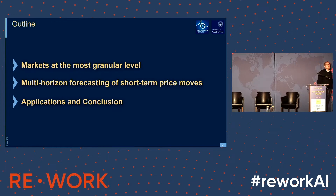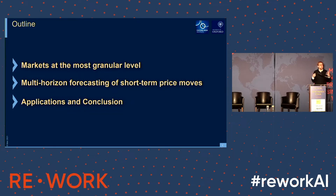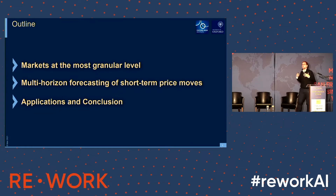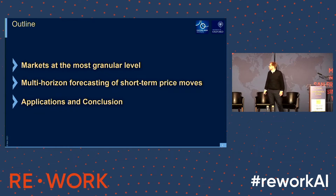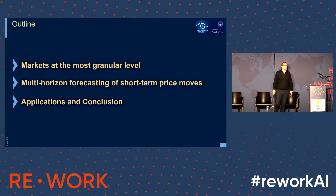First, I will talk a little bit about market microstructure and limit order book data, which is a type of high-frequency data which we will be using. That's a very important type of data because we have a lot of it. We know machine learning, and deep learning in particular, is very data-hungry, and it also has a bit more structure in it. Then I will speak about what I mean by multi-horizon forecasting models.